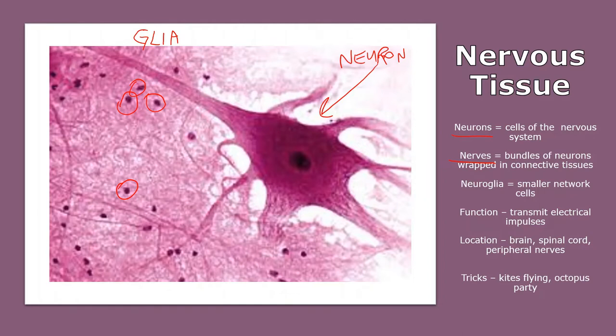Tricks to this? I see kites flying in the sky. If this is the string, then this would be kind of the triangular-looking kite. And sometimes you can see multiple kites flying, and the strings are getting all tangled up together. Some people call this an octopus party, because they see the neuron as being an octopus floating in the ocean together.